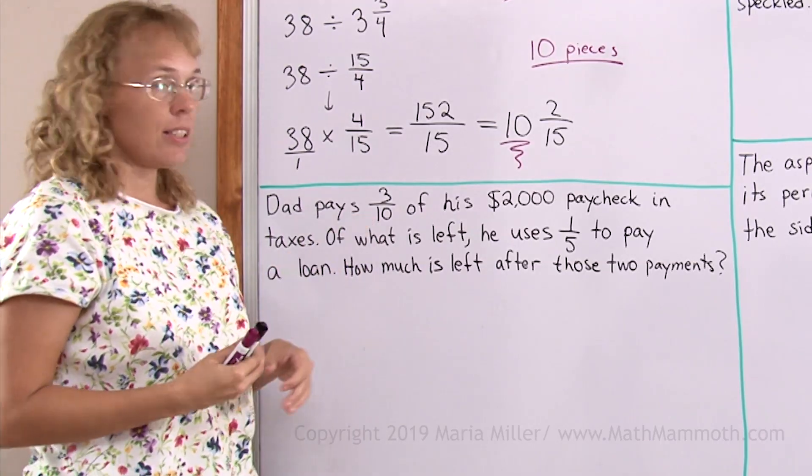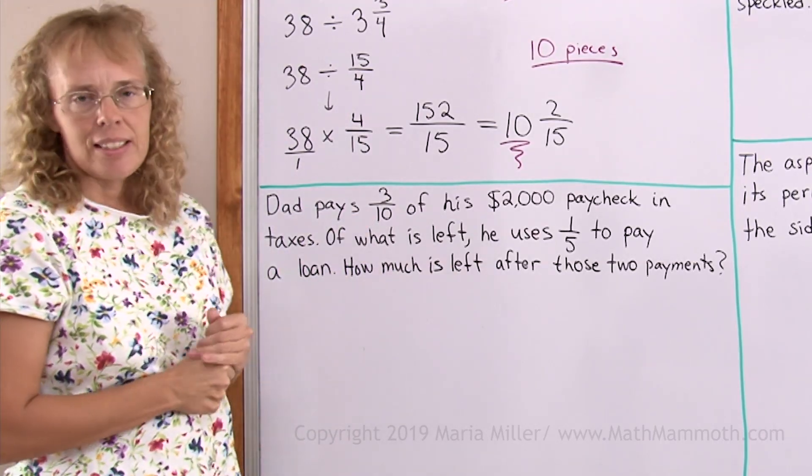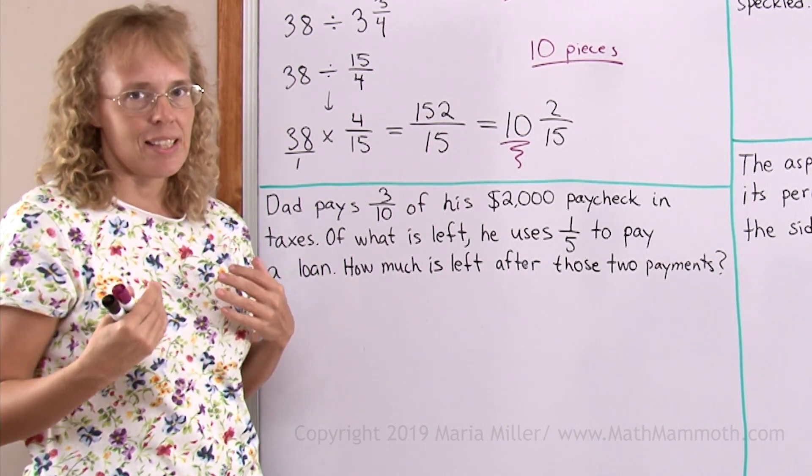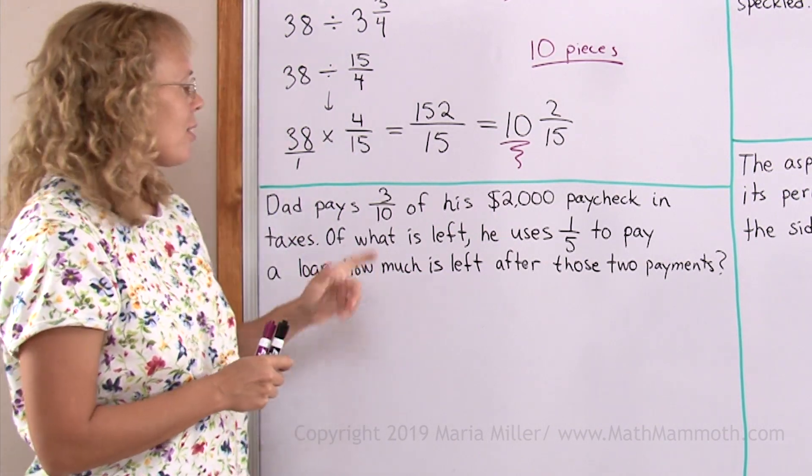Dad pays three-tenths of his $2,000 paycheck in taxes. Maybe he would in reality pay less than that, but I didn't want to get involved with fractions like twenty-four over a hundred or something like that. This is simpler.